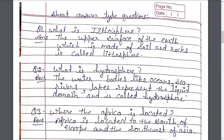Question-Answer. What is lithosphere? Sthal Mandal kya hai? The upper surface of the earth which is made of soil and rocks is called lithosphere. Prithvi ka sabse upri avaran jo mitti ve chhatano se bani hoti hai, Sthal Mandal kehlati hai. What is hydrosphere? The water bodies like ocean, sea, river, lake represent the liquid domain and is called hydrosphere. Samundr, nadiyan, jheel jaisa jal nikay taral padarth ko jal mandal kaha jata hai.